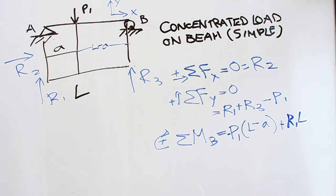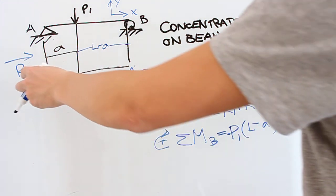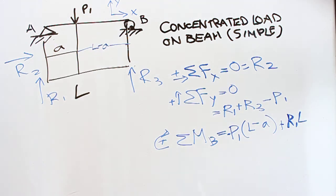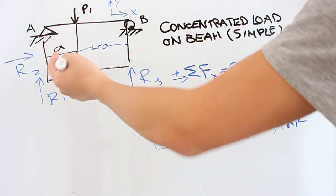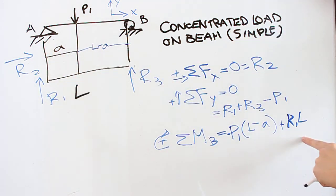All right. Now, if you write this out, we can solve for R1. We tend to want to solve for these variables we've added to the problem, because P1, L, and a would be constant values. So we want to solve for R1 because we can here.